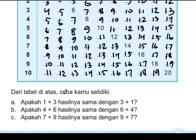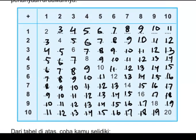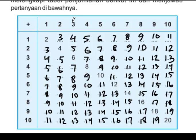Dari tabel di atas, coba kamu selidiki: apakah satu tambah tiga hasilnya sama dengan tiga tambah satu? Coba kita lihat. Satu ditambah tiga hasilnya adalah empat. Sekarang kalau tiga ditambah satu, hasilnya juga empat. Ternyata satu ditambah tiga sama dengan tiga ditambah satu — hasilnya sama-sama empat.